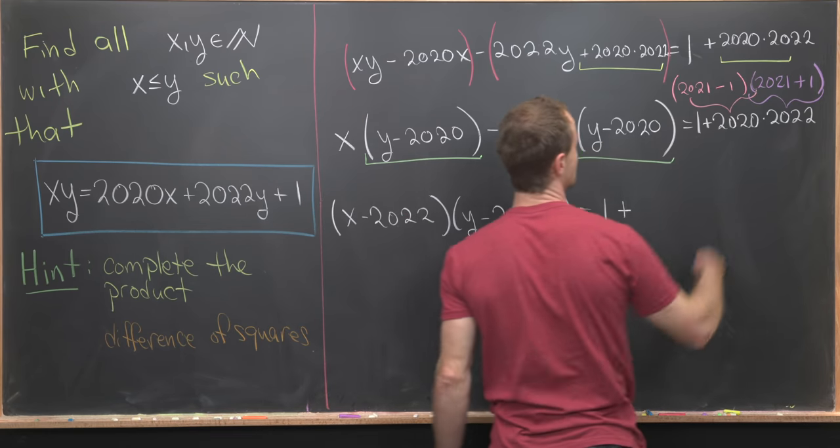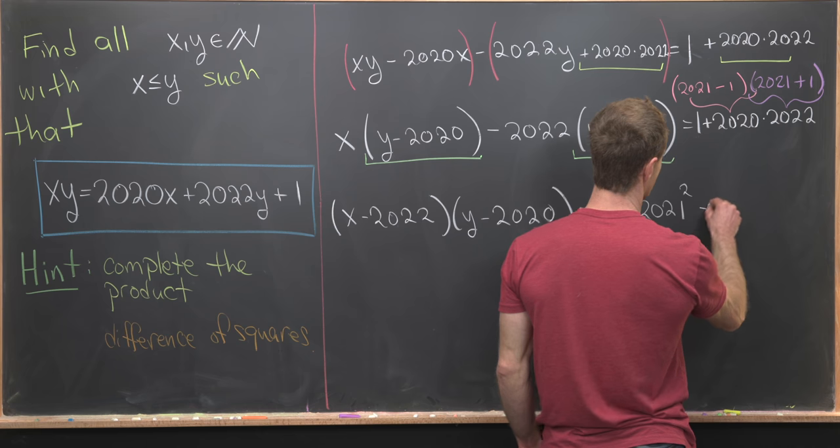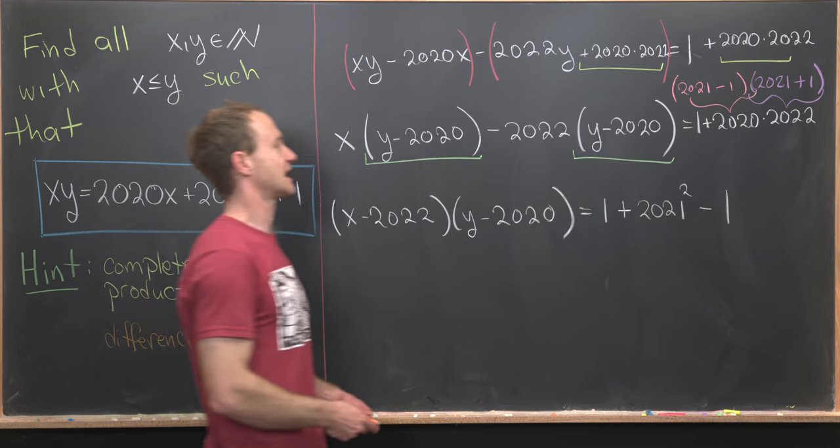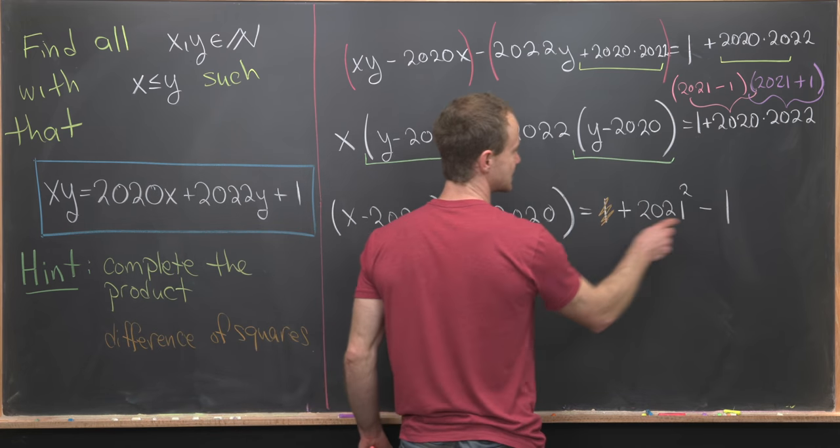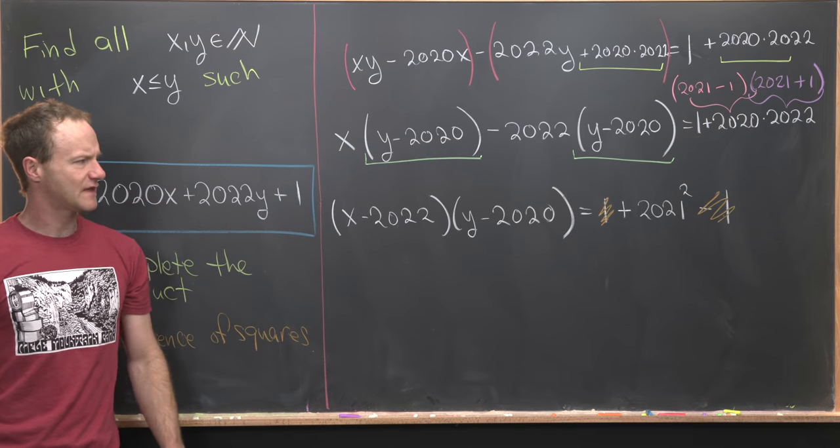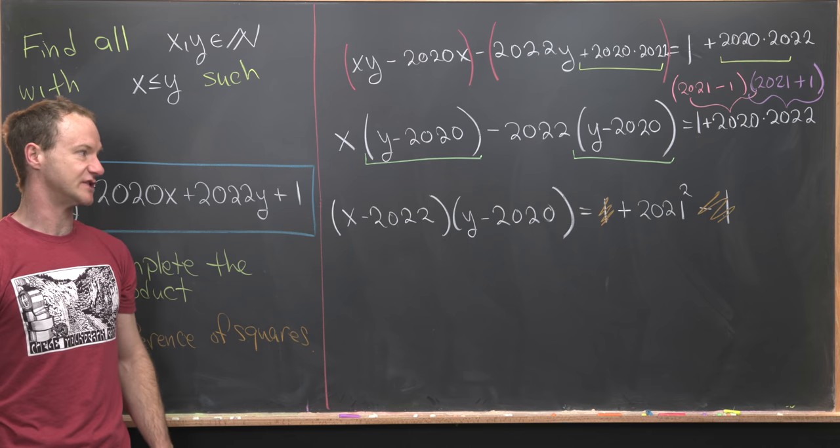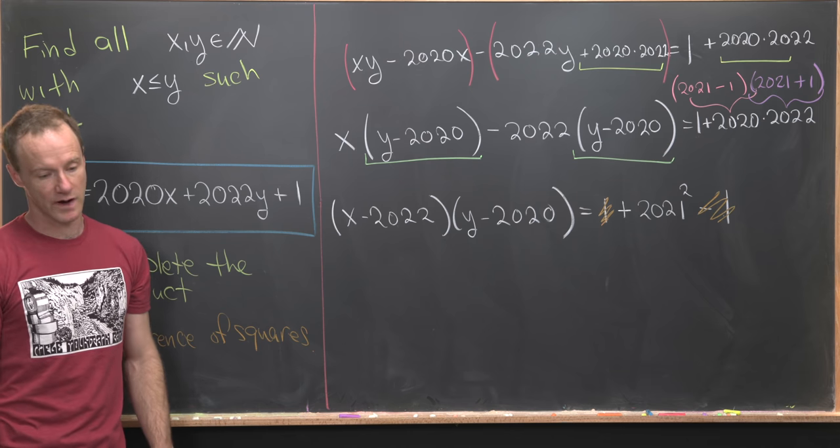So foiling out this pink and purple part will give us 2021² - 1. Which again, like I said, is good news because this -1 and this +1 will cancel each other. But now we can think about the prime factorization or really all the possible factorizations of 2021².